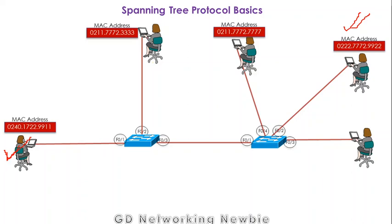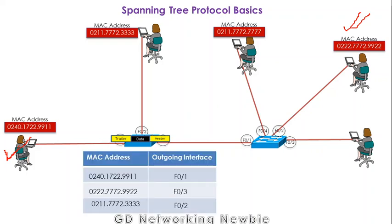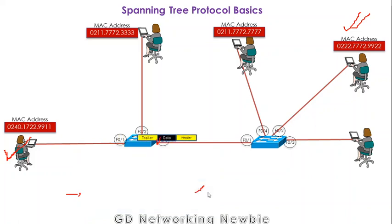A source user wants to send some data to a destination user. The source generates a frame and sends it to the nearby directly-connected switch. As per the switching logic, this switch looks into its MAC table — the Media Access Control table — to find the destination MAC address found in the header part of the frame.